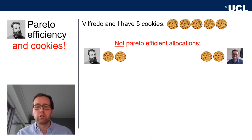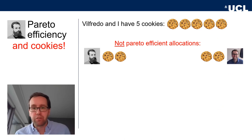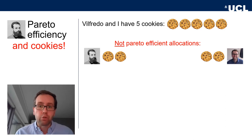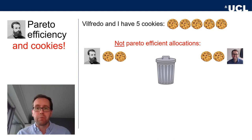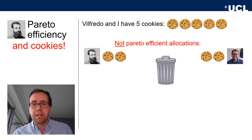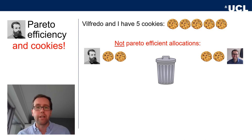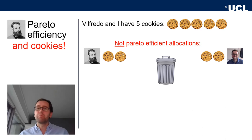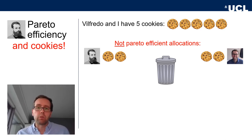What are allocations that are not Pareto efficient? Any allocation that doesn't distribute all five cookies. For example, Wilfredo getting two cookies, Roland getting two cookies, and one cookie going into the bin — that is not Pareto efficient because we throw away one cookie. Inefficient allocations of resources basically mean waste — it means throwing away cookies. That's something we want to avoid.